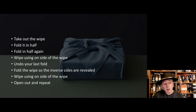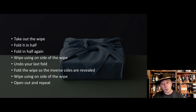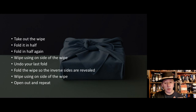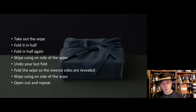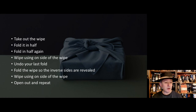To summarize the folding technique before watching the video: take out a wipe, fold in half, fold in half again. Wipe using one side, undo the last fold, then fold so that the inverse side is revealed and wipe again on that surface. Open and repeat — giving four usable surfaces per wipe.